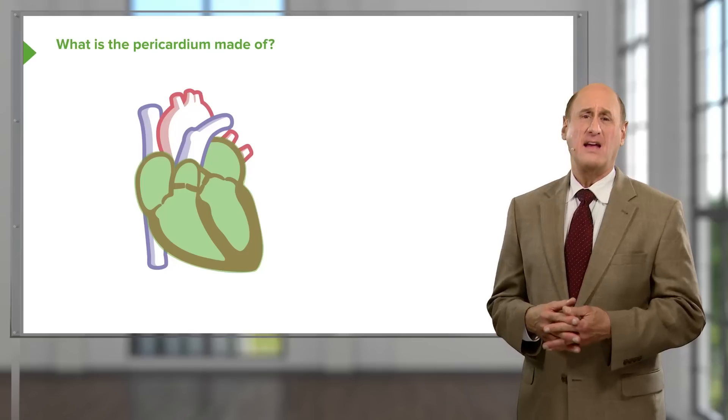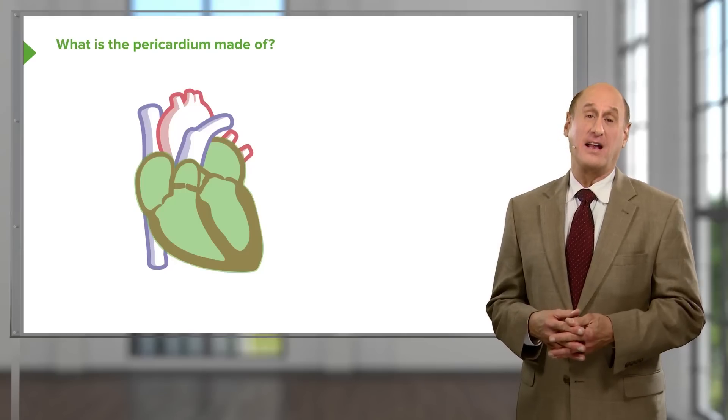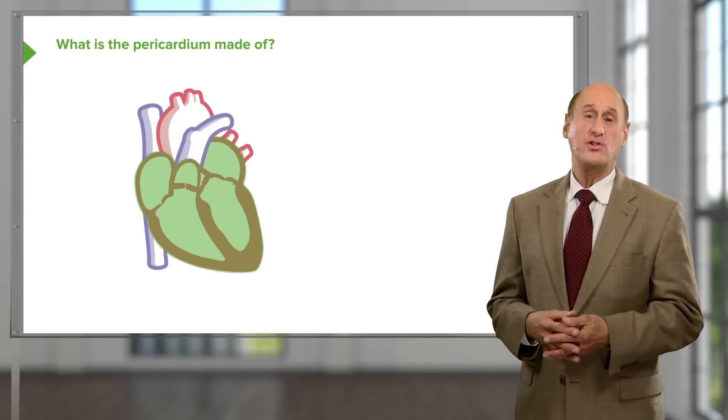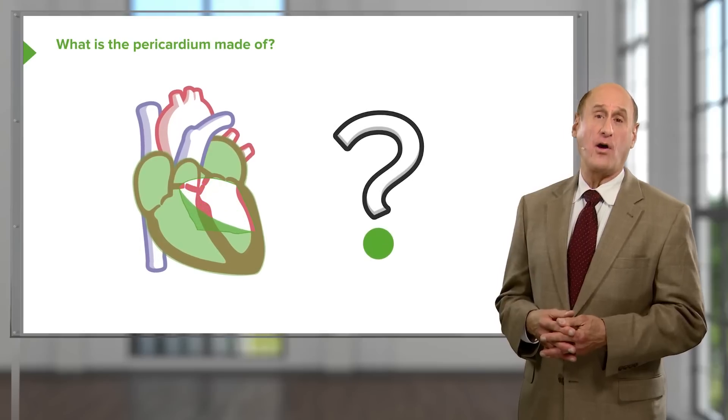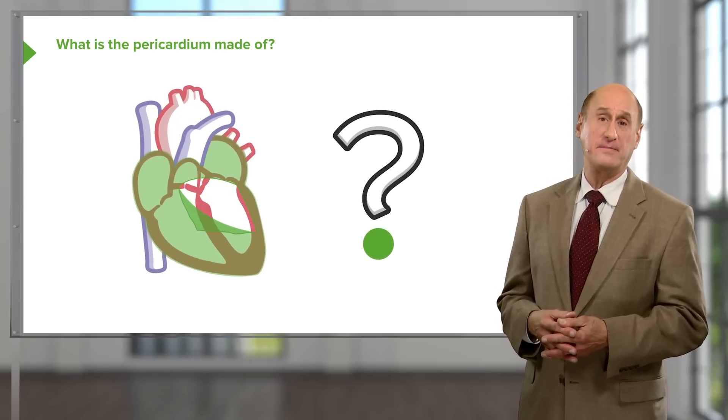Do you know the six important components of the heart? Most of us might know that the heart is a muscle in general, but what about the valves, arteries, and veins? And last but not least, could you exactly explain what the pericardium is made of?